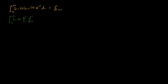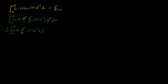So we substitute the Rodrigues formula for L_m: that's 1 over m factorial times d^m over dx^m of x^m e to the minus x. We can see that the two exponentials cancel, and we can pull out the 1 over m factorial. So the whole expression becomes 1 over m factorial times the integral from 0 to infinity of L_n(x) times the m-th derivative of x^m e to the minus x, dx.